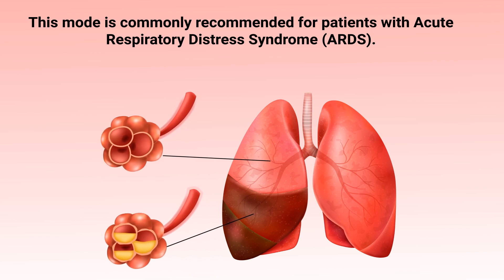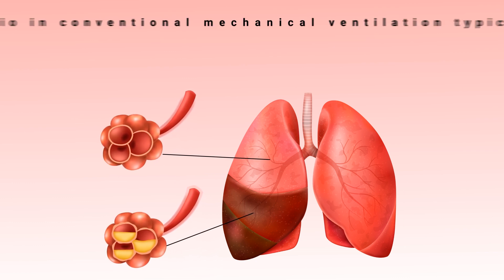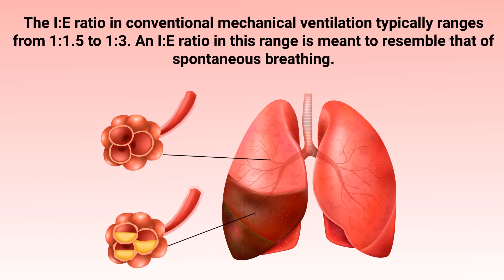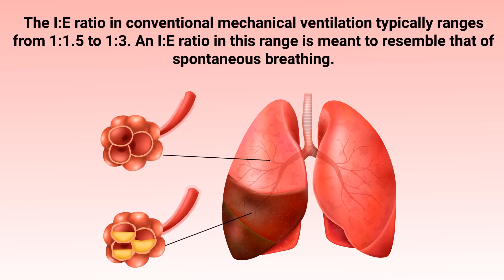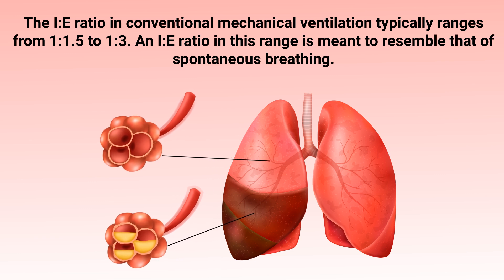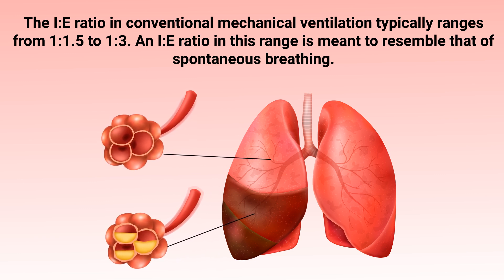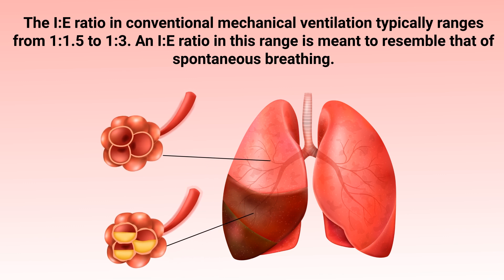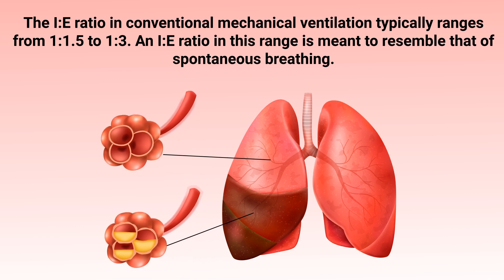That is why this mode is commonly recommended for patients with acute respiratory distress syndrome, or ARDS. The I:E ratio in conventional mechanical ventilation typically ranges from 1:1.5 to 1:3, which is meant to resemble that of spontaneous breathing.